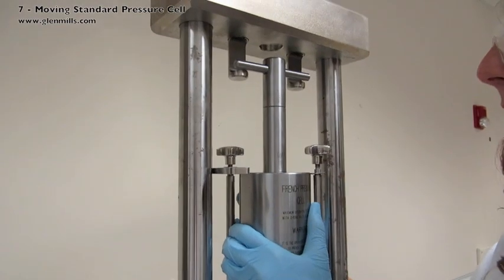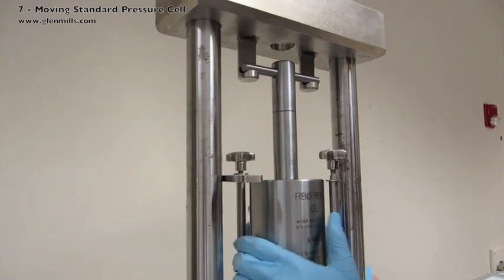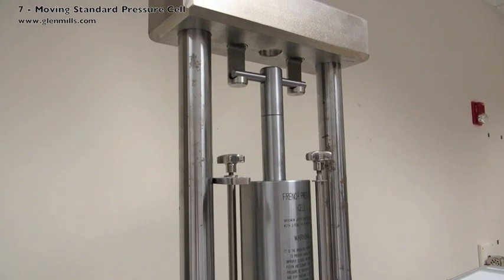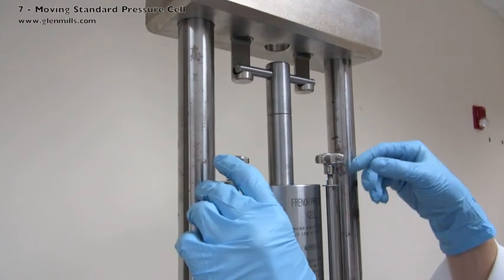Hook the piston's T-handle onto the J-hooks beneath the top platen. The top of the piston inserts into a recess hole in the top platen.